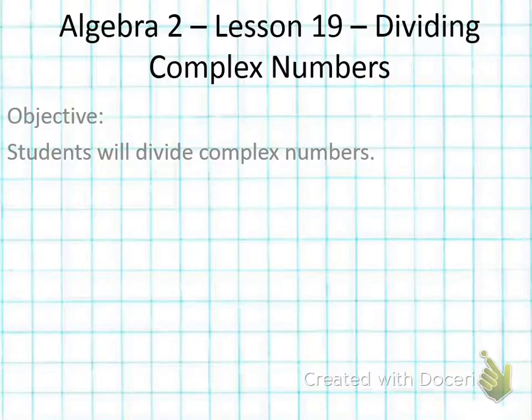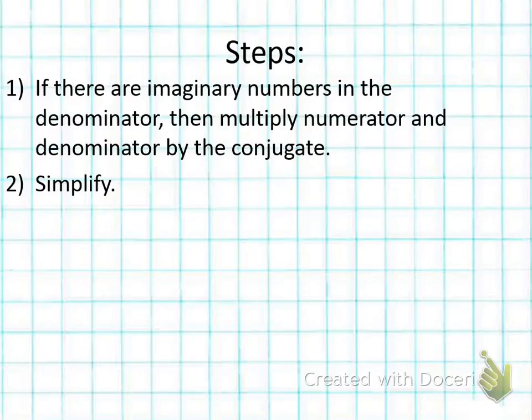Today we're going to look at these steps. If there are any imaginary numbers in the denominator, then multiply the numerator and denominator by the conjugate and then simplify.